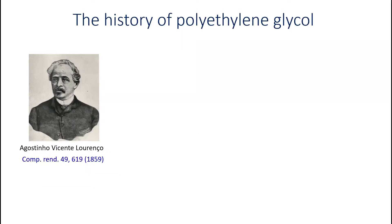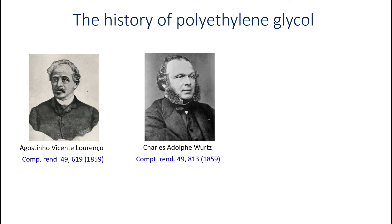The first publications on the synthesis of polyethylene glycol date back to 1859, when Portuguese researcher Agostinho Vicente-Lourenço reported experiments on heating ethylene glycol and ethylene dibromide mixtures in sealed tubes, and isolation of products ranging from diethylene glycol to hexethylene glycol.